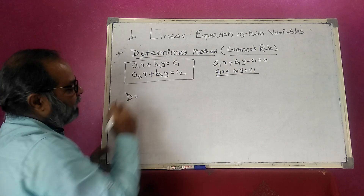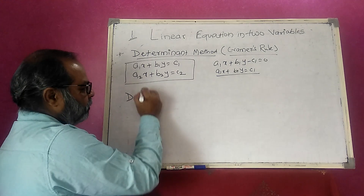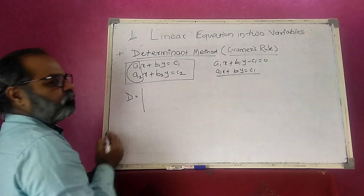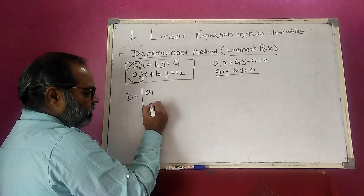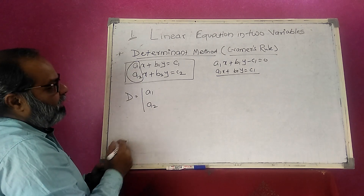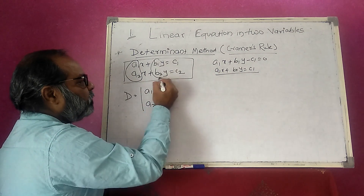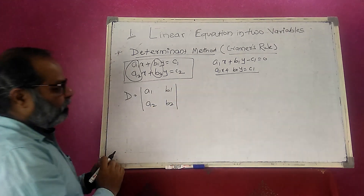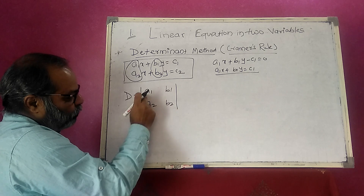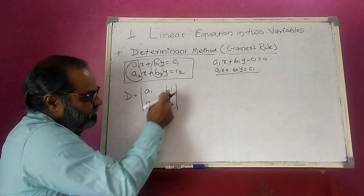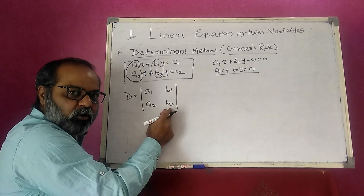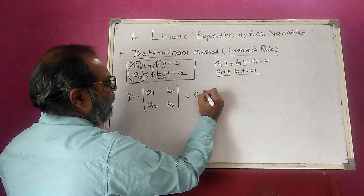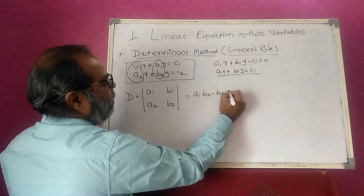Cramer's Rule uses determinants. He writes determinant D with the first column as the coefficients of x — that is a₁, a₂ — and the second column as the coefficients of y — that is b₁, b₂. The output of D is the number a₁b₂ minus b₁a₂.